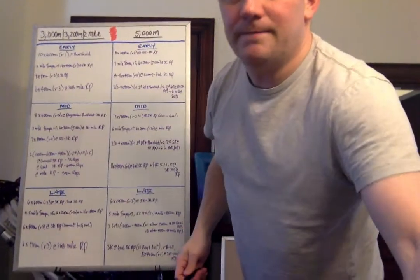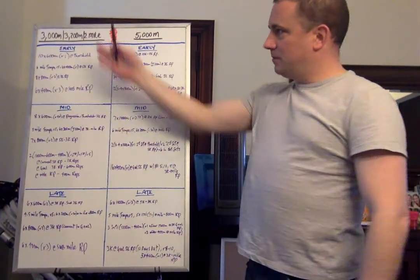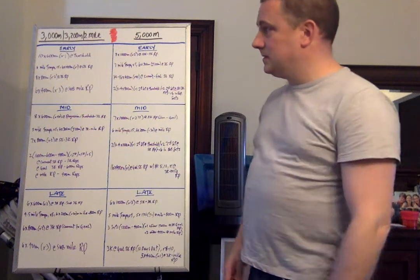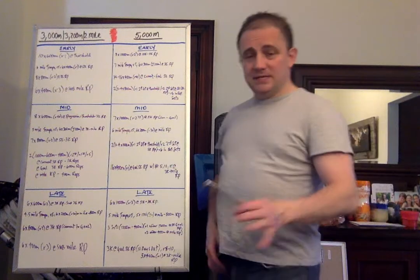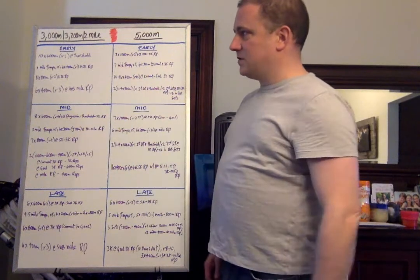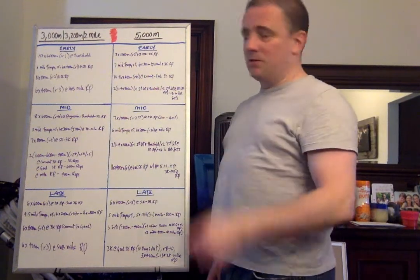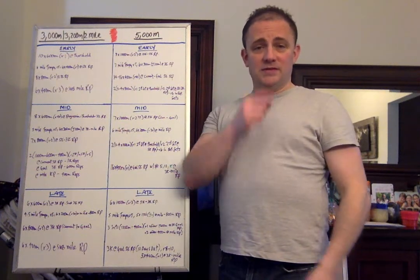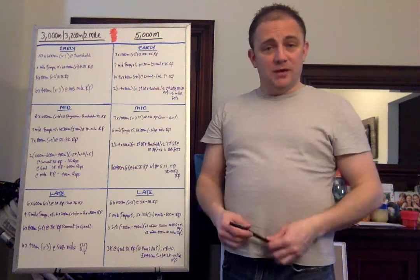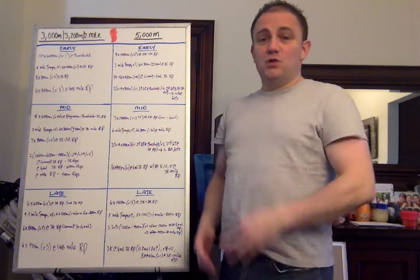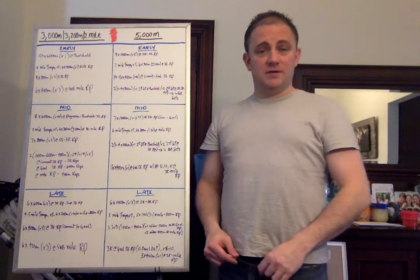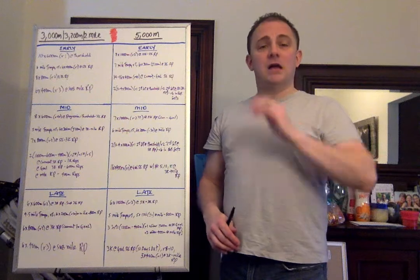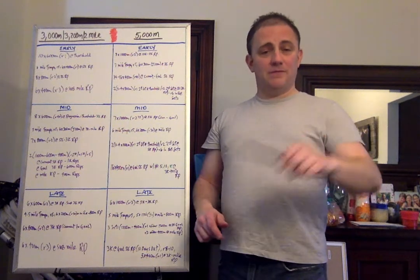All right. So let's start with the 3K slash 3200 slash 2 miles. This is great for high school, college, post-college. Here's some workout options. Early season first: 10 by 600 meter efforts at threshold pace with a one minute recovery. How do you know what the threshold pace is? Take a look at my other videos. I have videos on how to set the appropriate training paces based on current fitness.